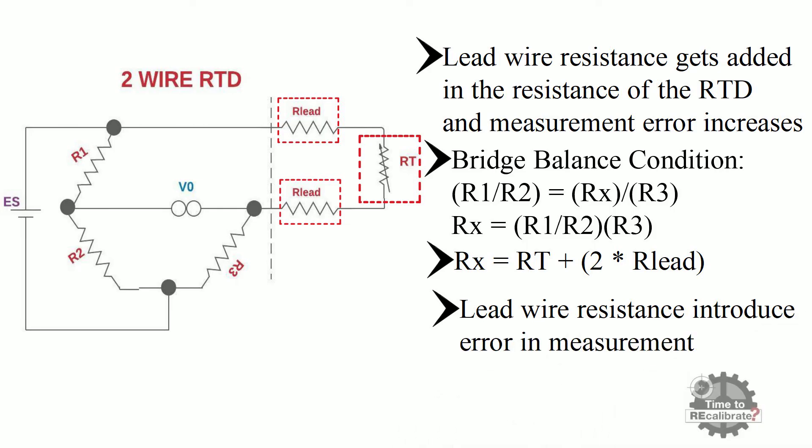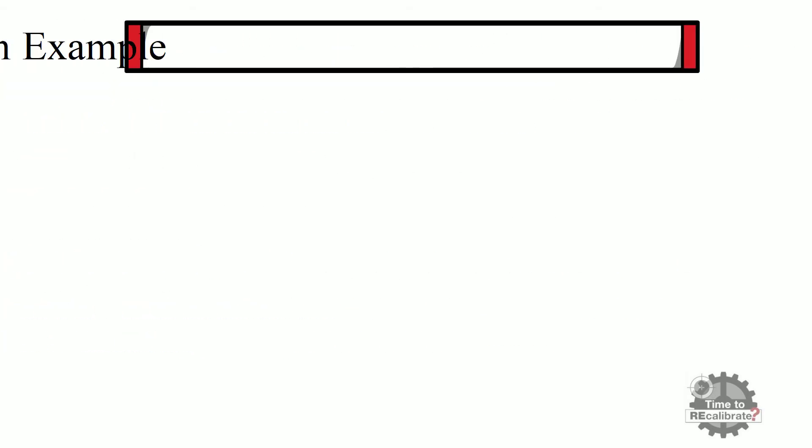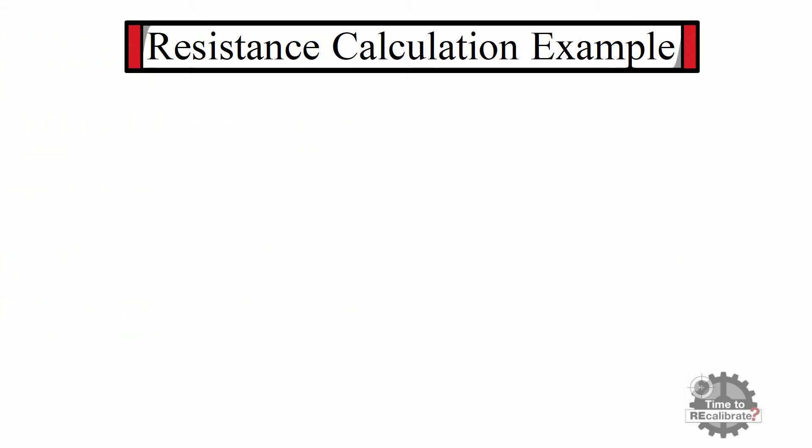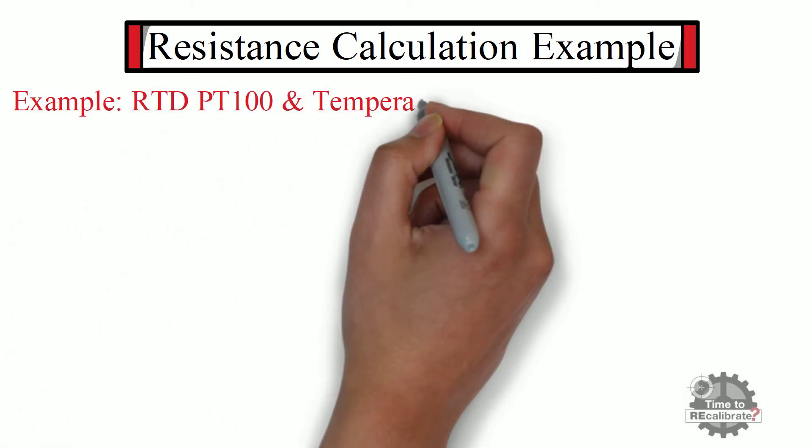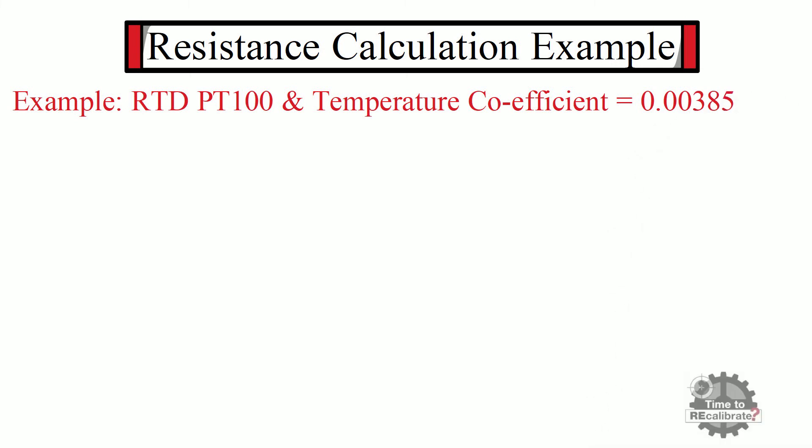Let's understand this by taking two examples. As you can see in this example, we have taken RTD PT100, and the temperature coefficient of this RTD is 0.00385.